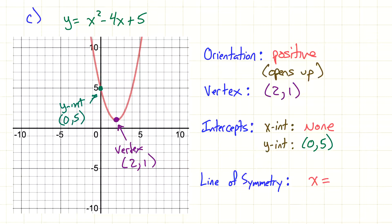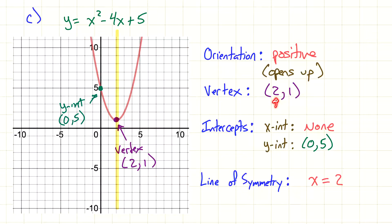For the line of symmetry, it always goes through the vertex. Drawing in that line, I look to see where it crosses the X-axis, and it's right here at 2. So the line of symmetry is X equals 2. You'll notice that's also the same 2 that's part of the vertex. And that's it.